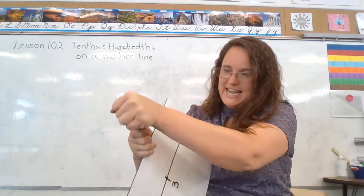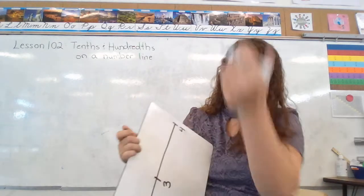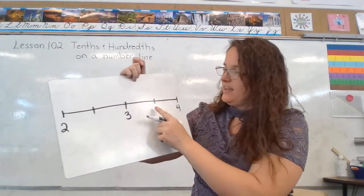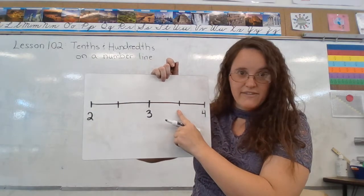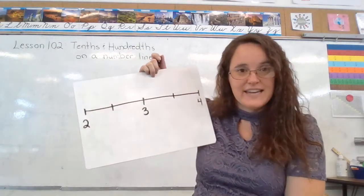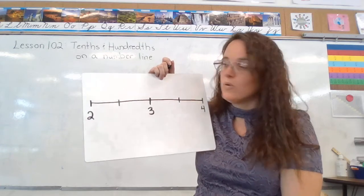We can take each of these, if I can open my marker here, break them in half, so this would be two and a half, this would be three and a half. I could break those halves in half, and then I'd have quarters or fourths.